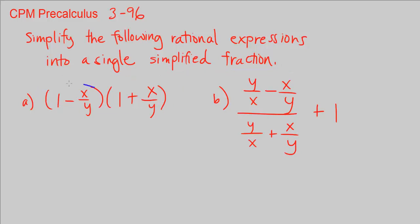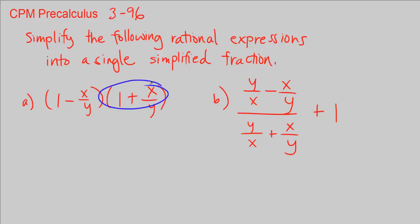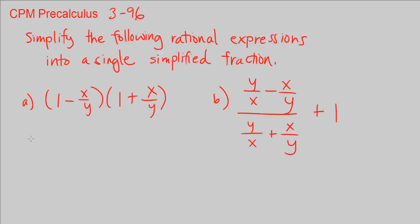Right now we have this binomial multiplied by this binomial and we want a single fraction. So let's look at these terms here first in this binomial — we have 1 minus x over y, times 1 plus x over y.